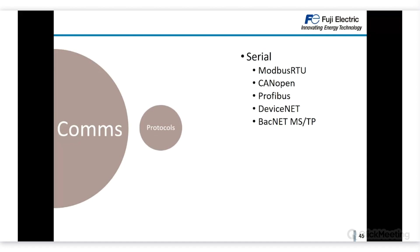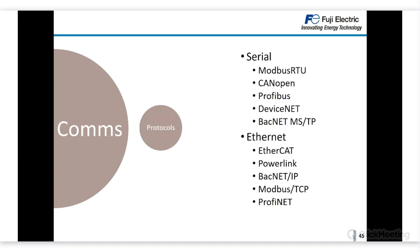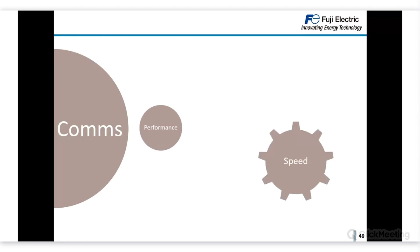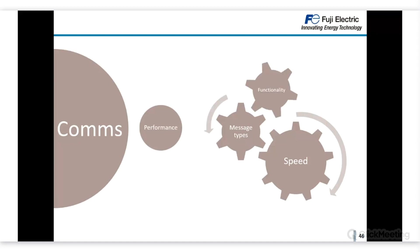Available protocols include serial communications such as Modbus RTU, CANopen, PROFIBUS, DeviceNet, or BACnet MSTP, as well as Ethernet-based communications such as EtherCAT, PowerLink, BACnet IP, Modbus TCP, or PROFINET. Communication performance is a combination of communication speed, available message types, the number of message frames accepted for a given application, and functionality — for example, whether velocity mode or torque mode of CiA 402 is supported.